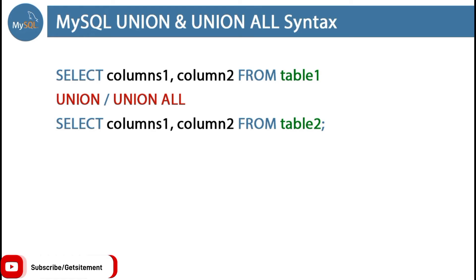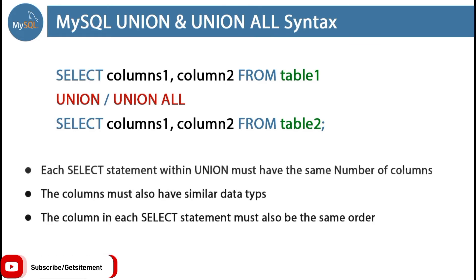But when we use UNION or UNION ALL, we need to maintain some rules. Our first rule is each SELECT statement within the UNION must have the same number of columns. Our second rule is the columns must also have similar data types — for example, if the first column is id its data type is INT, and if the second column is name its data type is VARCHAR — so we need to follow the same data types for both tables. Our third rule is the columns in each SELECT statement must also be in the same order. If we select the id column in our first table, we need to select the id column in the same position for our second table.